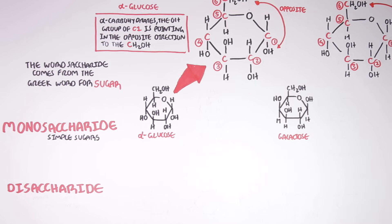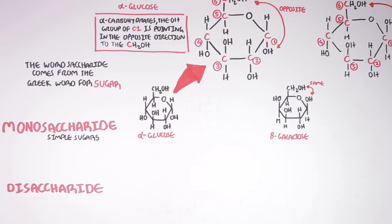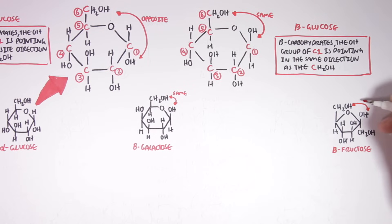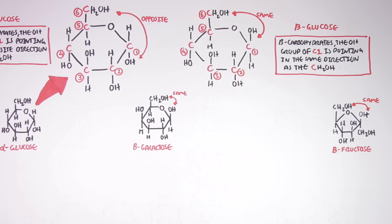These alpha and beta configurations also apply to other types of carbohydrates, such as galactose and fructose. For example, this galactose molecule is actually a beta galactose, because the hydroxyl group and carbon number six are pointing in the same direction. Similarly, this fructose is in a beta configuration — a beta fructose — because the hydroxyl group is pointing in the same direction as carbon number six.